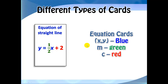The second type of card is called the equation cards. The words 'equation of straight line' will be written on top of the card. The blue color represents the x and y coordinates, the green color represents m, which is the gradient, and the red color represents the y-intercept, which is c.